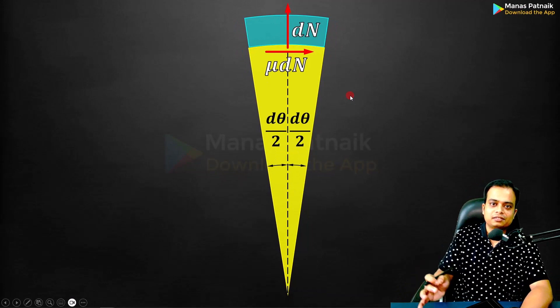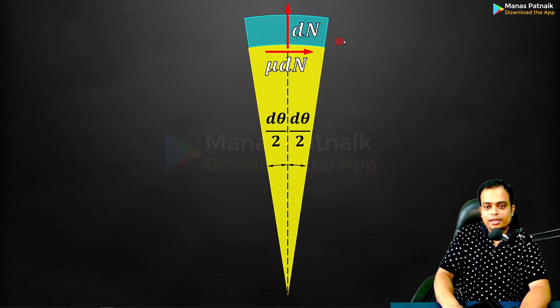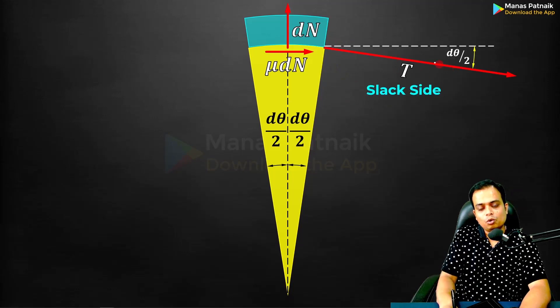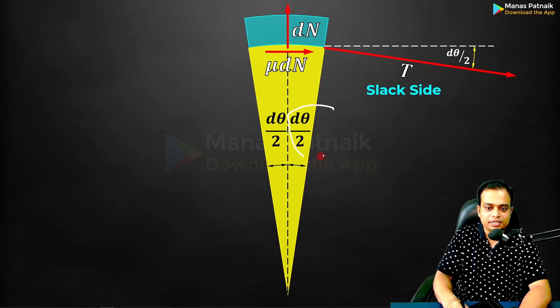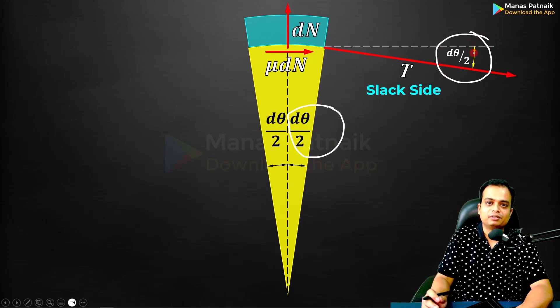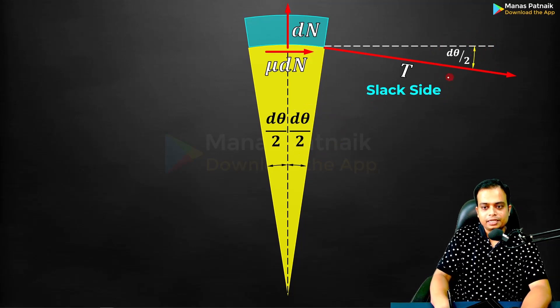There is a tighter side and a slacker side. Over here we have the slack side. Let's call the tension on this portion of the belt—right-hand side portion—as T. If the angle here is dθ/2, the angle over here also is going to be dθ/2. Very simple geometric case.